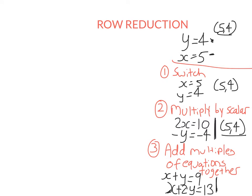So why am I telling you this? We actually represent simultaneous equations as matrices, and we'll go through that more next lesson. Because I can do these operations with equations, I can actually do them to the rows of a matrix — and that's what row reduction is. It's performing one or more of these operations consecutively to reduce the matrix so the numbers are easier to work with.